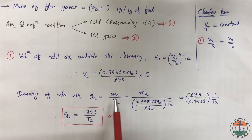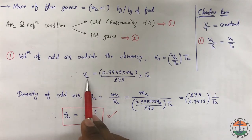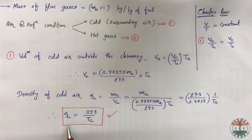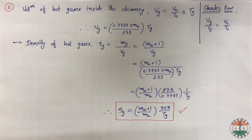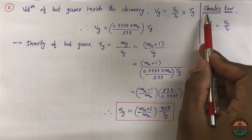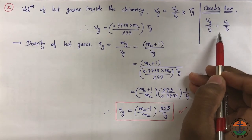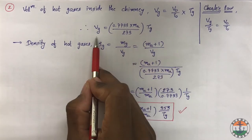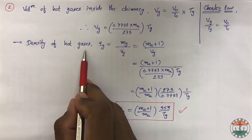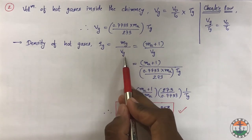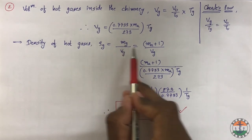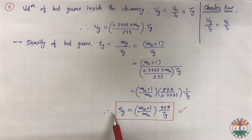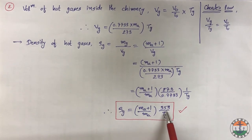Density of cold air rho_A equals Ma/VA. Substituting VA gives rho_A = 353/TA. For the second comparison, applying Charles' law to hot gases inside the chimney versus reference condition gives Vg = (V0/T0) × Tg. Density of hot gases rho_G equals Mg/Vg, where Mg equals Ma plus 1. The final value of rho_G becomes (Ma+1)/Ma × 353/Tg.